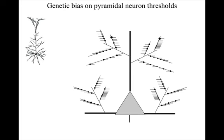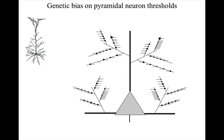Genetic information can also specify the rough number of inputs that a neuron gets initially, and the kind of combinations of active inputs needed for receptive field detections — in other words, the thresholds. Then genetic information can determine which cortical areas will provide most of the inputs recommending each behaviour — in other words, which receptive field complexities are most effective for recommending the behaviour type.